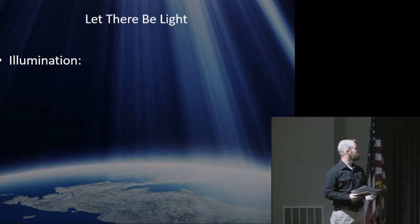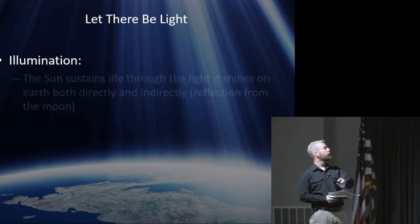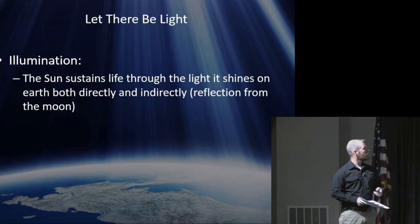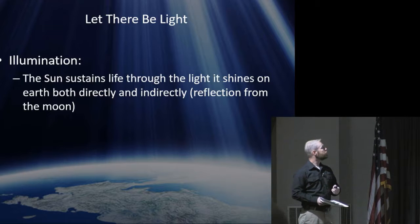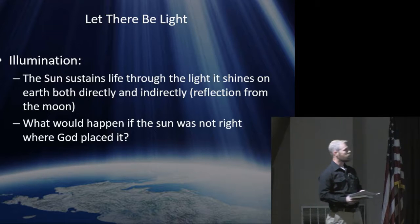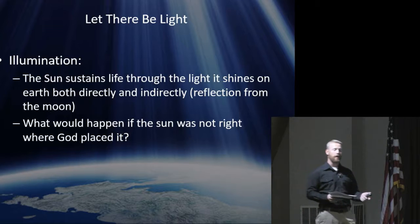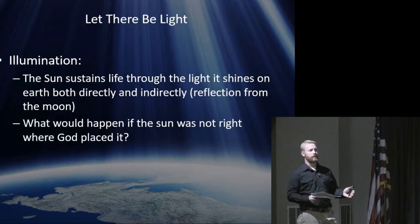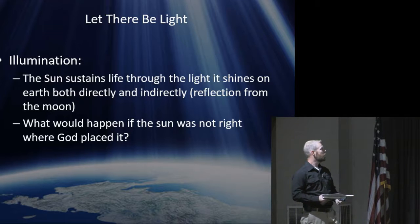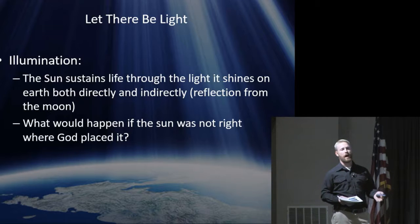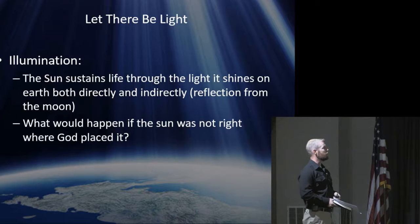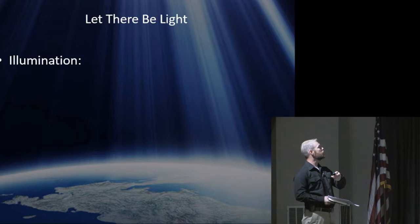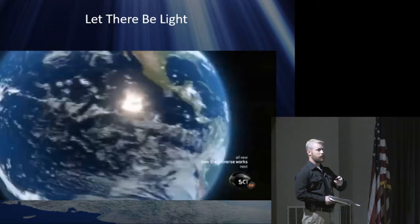We know that God created everything for a purpose, and included in all of creation, even the sun, moon, and stars had a purpose: illumination, signs, and seasons. We learned today that the sun sustains life through the light that it shines on earth, both directly and indirectly, being the reflection through the moon. And we learned a little bit about what would happen if the sun was not exactly where God placed it. Let's take a look at what exactly would happen if things were off by just a fraction.